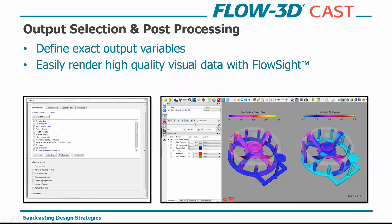Then you have your output selection. For a filling simulation I like to see entrained air, fluid fraction, fluid temperatures, fluid velocities, overall pressures, solid fraction, and surface defect concentration — our marker for oxide formation. You can turn these on and off based on where in the process you are. Flow3D Cast is paired with our post-processing tool called FlowSight, used to clearly render output data and make side-by-side comparisons, with full control of color scales.